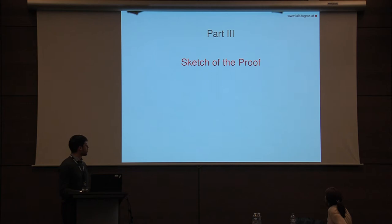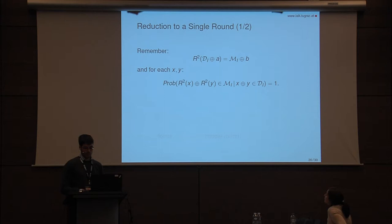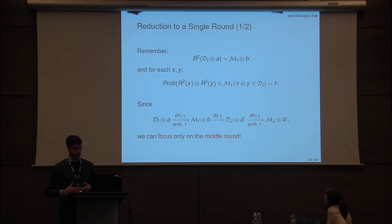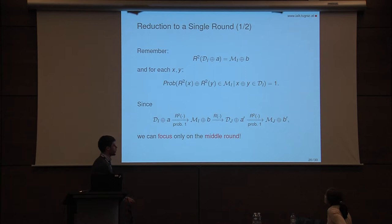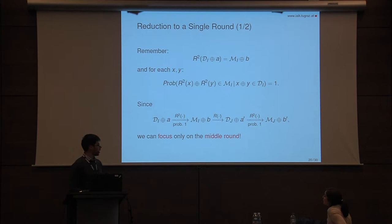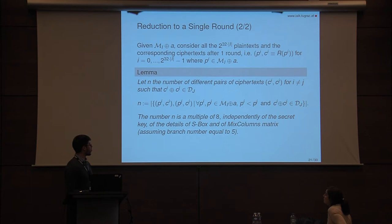In this final part, I give the idea of the proof. We have seen that each coset of a diagonal space is mapped into a coset of a mixed space after two rounds. We have a property on five rounds, and the idea is to prove an equivalent property on a single round. We start with plaintexts in the same coset of a diagonal space, which is mapped into a coset of a mixed space after two rounds. The idea is to work only on the last three rounds. Counting pairs of ciphertexts in the same coset of a mixed space is equivalent to counting pairs of texts in the same coset of a diagonal space two rounds before. So instead of working on five rounds, we work on a single round — the middle round. The property to prove: given texts in the same coset of a mixed space, the number of different pairs of ciphertexts belonging to the same coset of a diagonal space after one round is a multiple of eight.